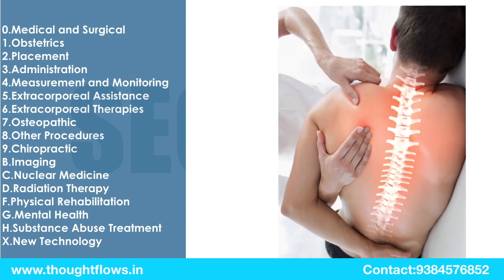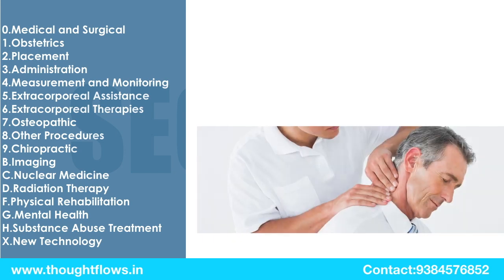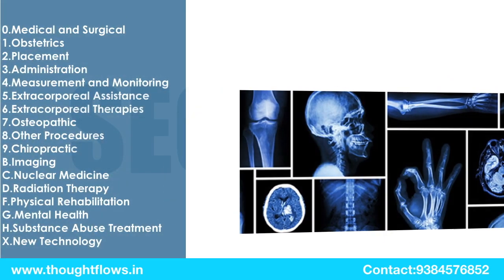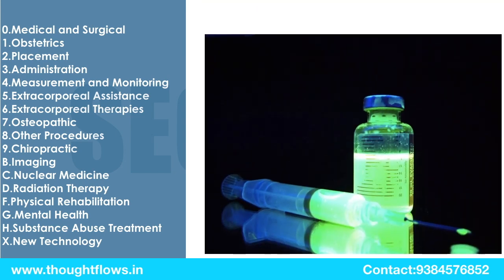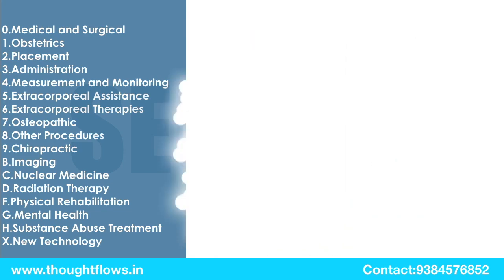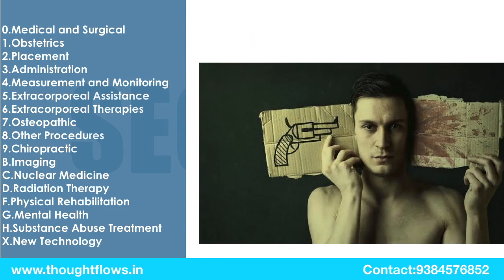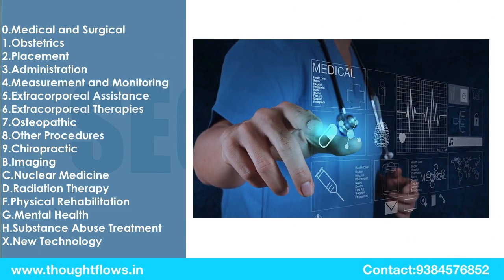If the patient is having osteopathic, chiropractic, or other procedures, we can see those in sections 7, 8, and 9. If the patient is having any X-rays, nuclear medicine, or radiation therapies, we can see those in sections B, C, and D. Psychotherapies, mental health and behavior counselling, substance abuse treatments, and new technologies are covered in the last sections. Likewise, the first character of the PCS book — that is, Section — is classified into 17 subsections.